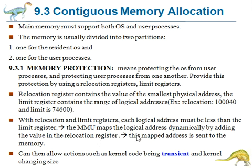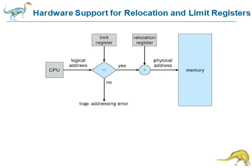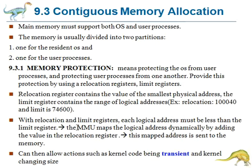If the logical address value is less than the limit register, the MMU maps the logical address dynamically by adding the value in the relocation register. In the diagram, the CPU provides a logical address; if it is less than the limit register value, that logical address is combined with the relocation register value to produce the physical address.